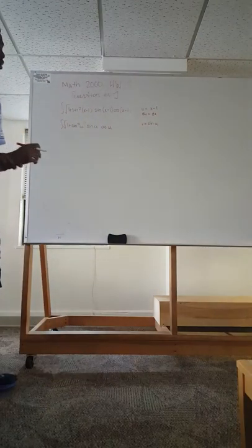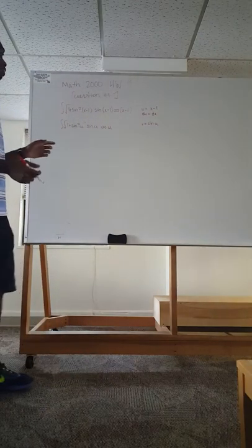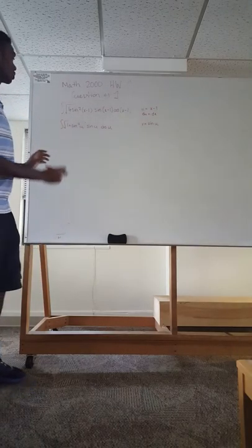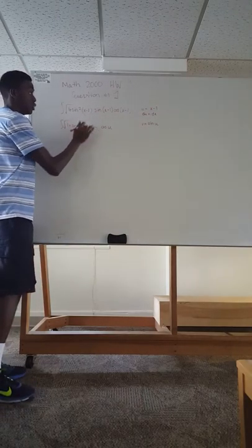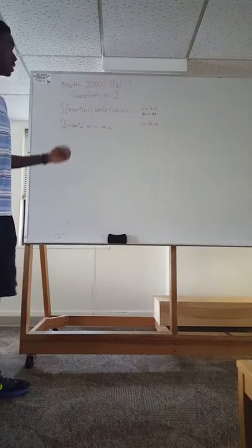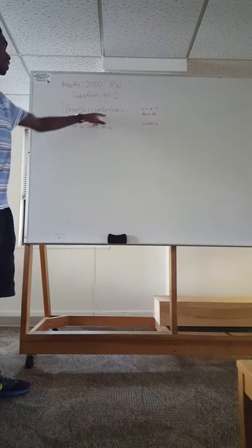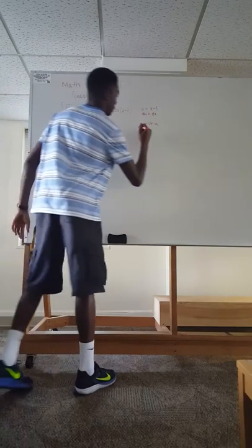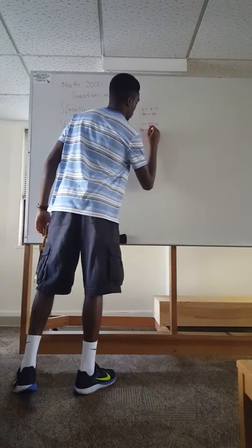And what you want to look to do is when you're doing the substitutions, you want to look to substitute something that's within. So here it's actually 1 plus sine squared, to the 1 half. So you want to look to substitute something that's within another function, as in we substitute x minus 1, which is within sine of x. So derivative of this is going to be equal to cosine of u.